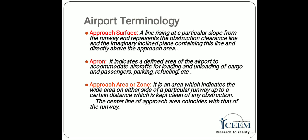Approach Surface — a line rising at a particular slope from the runway end. It represents the obstruction clearance line and the imaginary inclined plane containing this line, directly above the approach area.